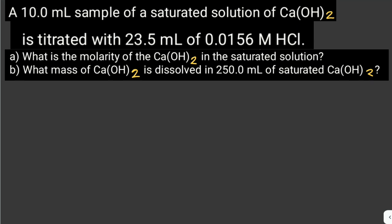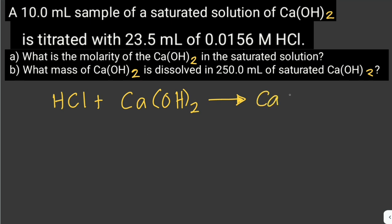Before solving this problem, we need to write a balanced chemical reaction between calcium hydroxide and hydrochloric acid. So that would be hydrochloric acid and calcium hydroxide. The products: calcium goes with chloride, giving calcium chloride plus water. Then we balance this — we need two moles of hydrochloric acid and two moles of water.